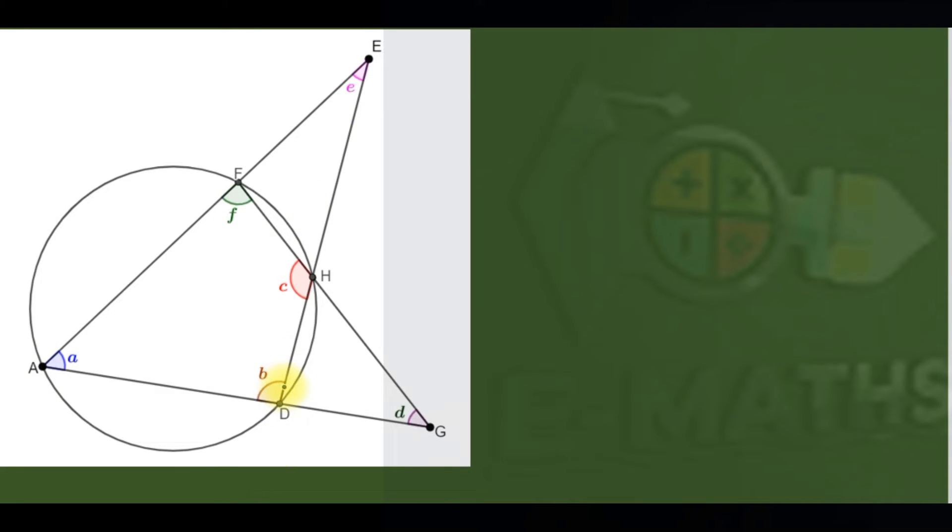The exterior angle here is the same as the sum of this, so this is a plus d by exterior angle theorem. And also from exterior angle of a cyclic quadrilateral, if here is a, here is also a. So form a triangle, and we know that the sum of angles is 180.